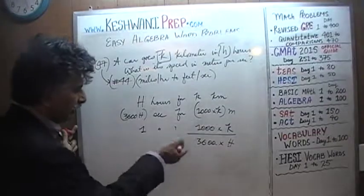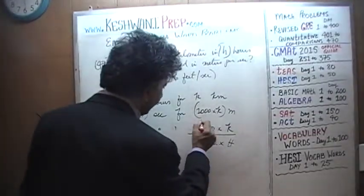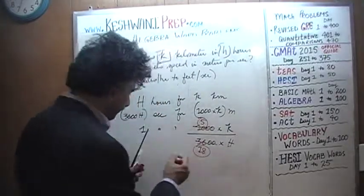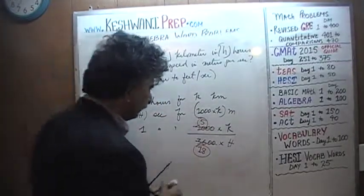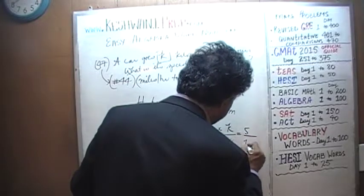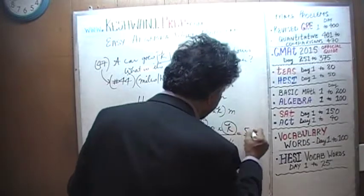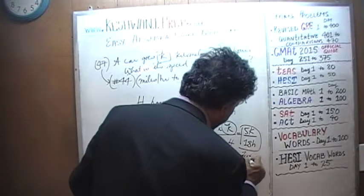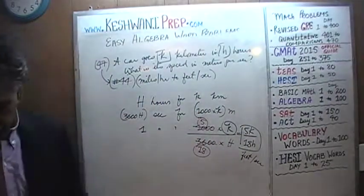The two zeros drop out. Divide top and bottom by 2. 10 becomes 5 and 36 becomes 18. So the final answer is 5 over 18, 5 over 18. And we have a k here. So it's 5k over 18h. Feet per second. That's all there is.